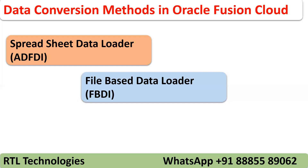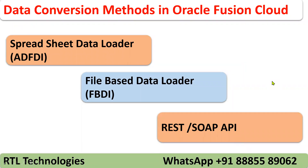With FBDA you have the flexibility to run and schedule programs and call them from other integration tools. Another method is using REST or SOAP APIs. In case you do not have the FBDA or Spreadsheet Data Loader facility, we can also use REST or SOAP APIs to integrate. API stands for Application Programming Interface — whenever you want to exchange data between applications, we use REST or SOAP APIs in web services.